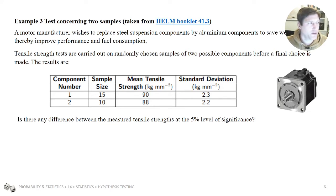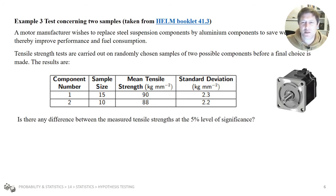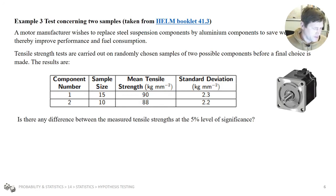A motor manufacturer wishes to replace a steel suspension component with aluminium to save weight. Tensile strength tests are carried out on randomly chosen samples of two possible components. We're given a mean tensile strength of 90 for one and 88 for the other, with standard deviations of 2.3 and 2.2. Is there a difference in measured tensile strengths at the 5% level of significance?